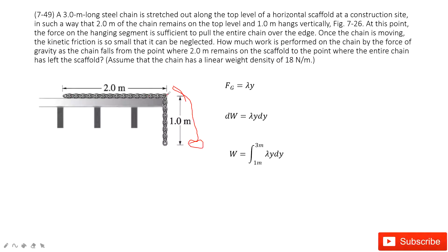So initially there is this setup. We can see the work done by gravity — in this case, we just need to consider the part which is not on the table. We just need to consider this hanging part.